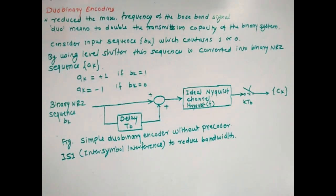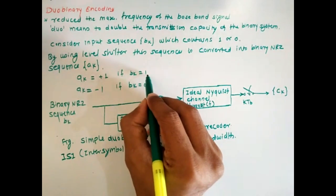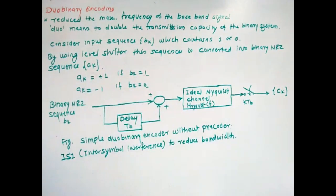Now we are having a two-level system where the magnitude is 0 and 1, and that is converted into a three-level system to reduce the inter-symbol interference and also to reduce bandwidth.